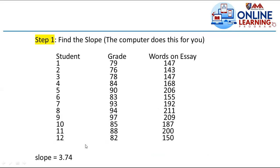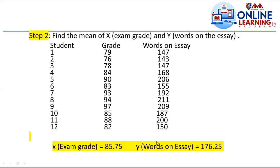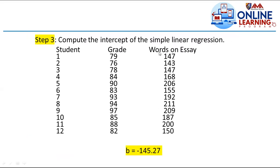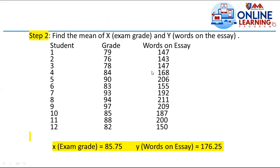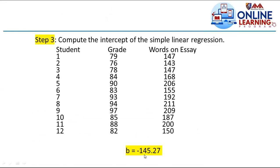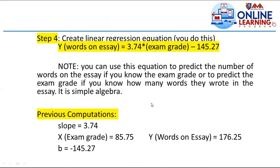Doing the computations, we get the slope of 3.74. Using the means of x and y, we compute the intercept. With the formula b equals summation of y minus m times summation of x, divided by n, your b is negative 145.27. The linear regression equation is: y (words on essay) equals 3.74 times exam grade minus 145.27.